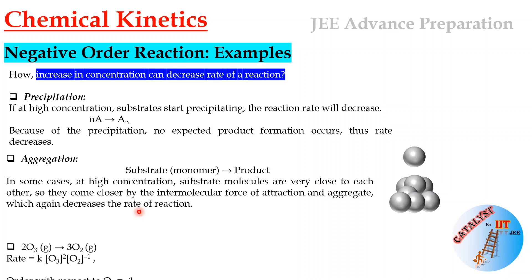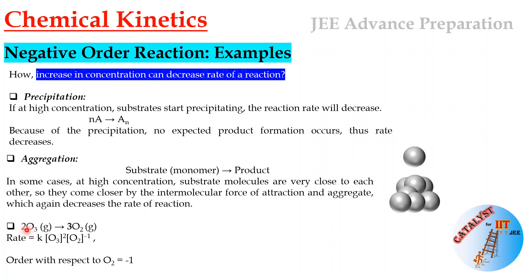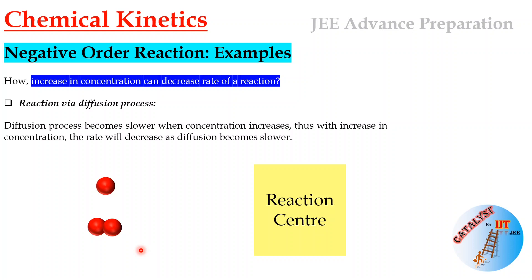A common textbook example of a negative order reaction is the decomposition of ozone to oxygen: O3 → O2. In the experimental rate expression, the order with respect to O2 is −1. This is a common exam question — the order of this reaction with respect to O2 is a very good example of a negative order reaction.